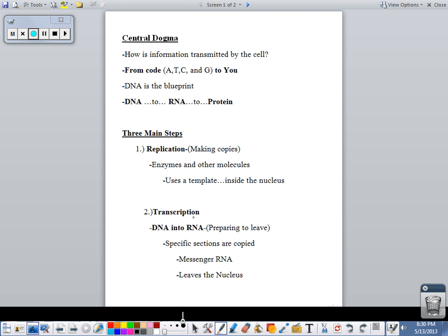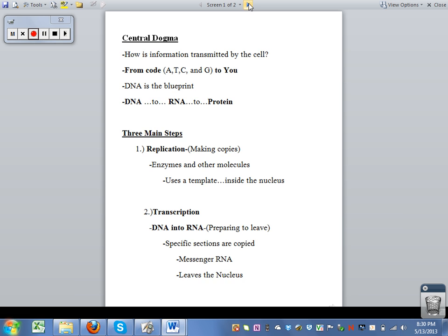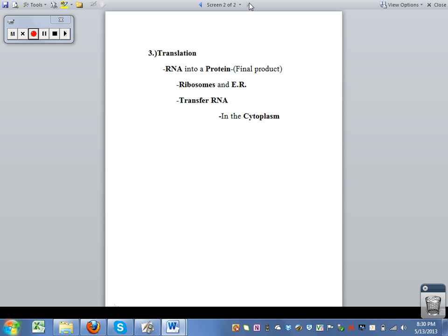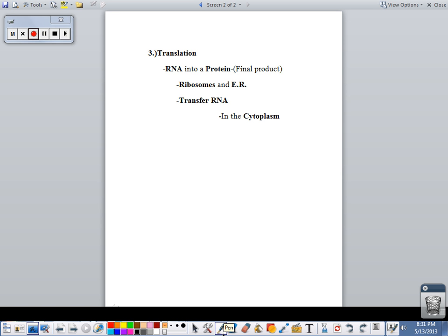The last part of the central dogma is translation. Translation is the part where you now have this messenger RNA and it is turned into a protein. This occurs at a ribosome and in the endoplasmic reticulum sometimes. Now if you remember from cells, cells have many different organelles. One of them is just passageways called endoplasmic reticulum ER. And within the ER, this rough ER, that has ribosomes. Those ribosomes attach themselves to the messenger RNA and then make a protein. It could also occur in just the cytoplasm itself.